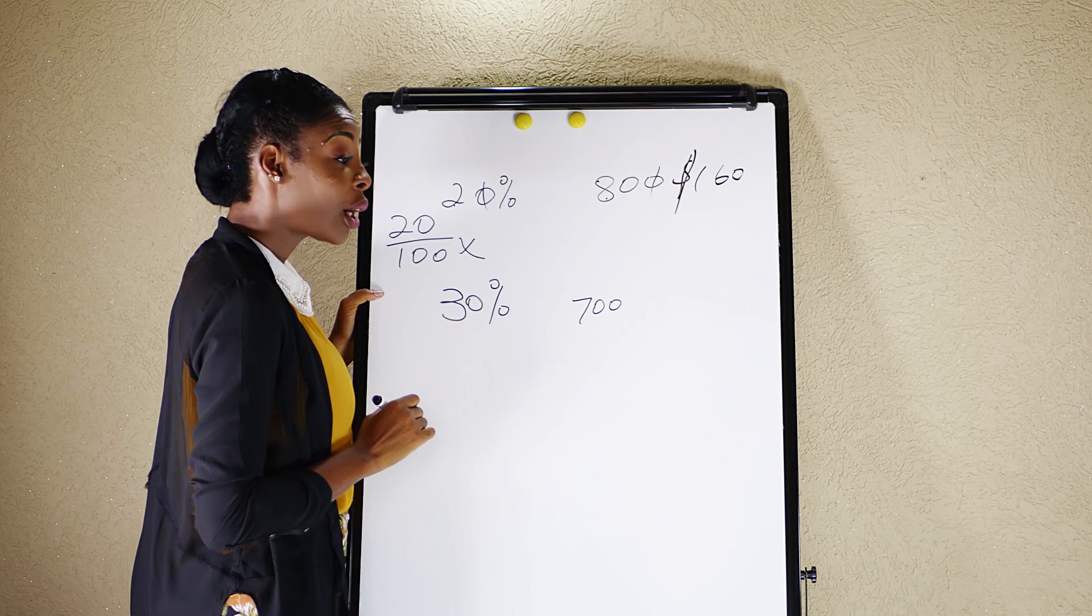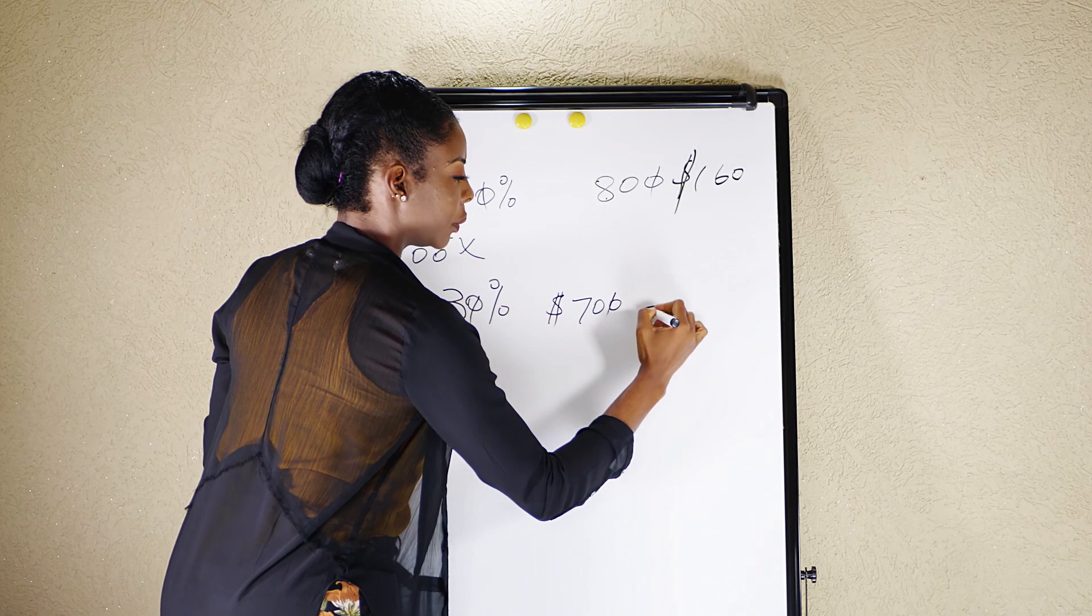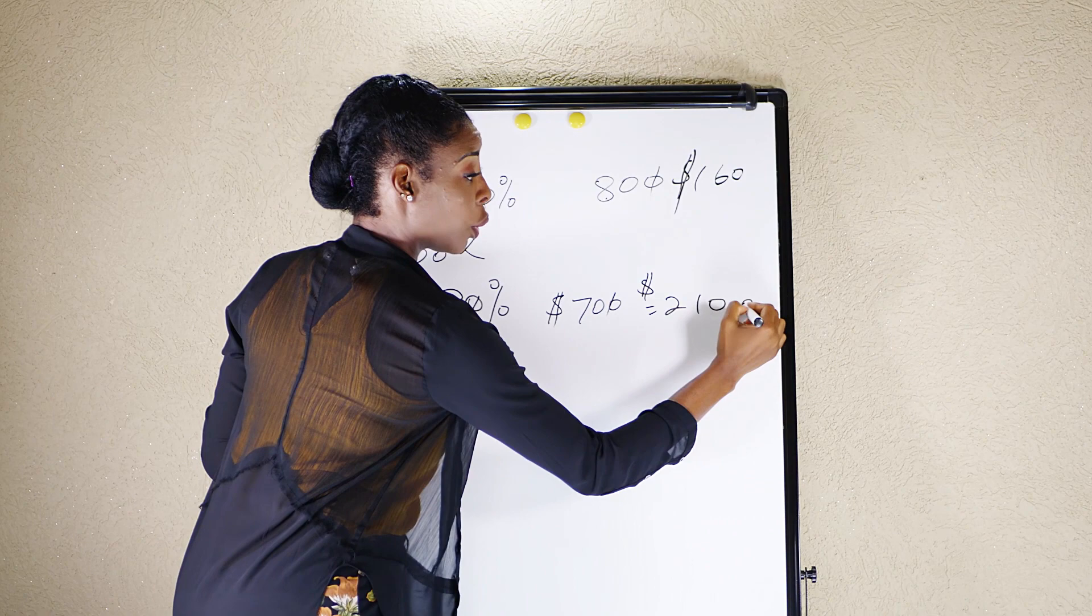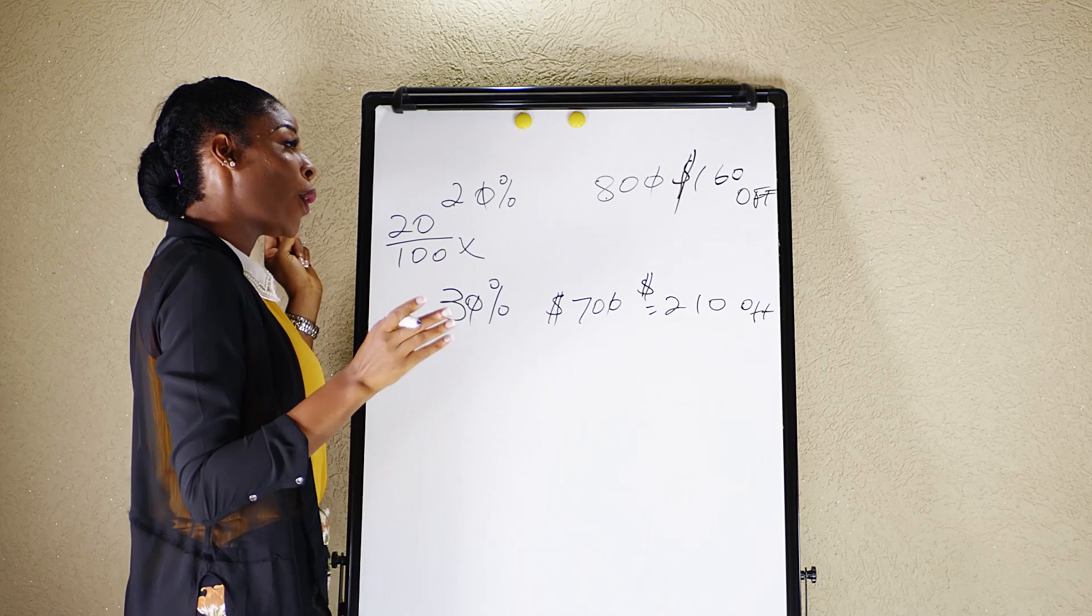How much discount are you getting? Quickly. Seven times three is 21. $210 off, right? This is not the price, but off. This is the discount. You're getting that off.